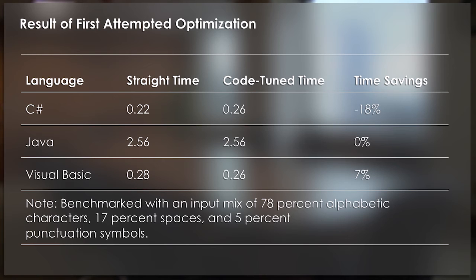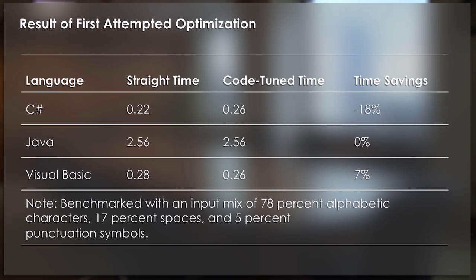Well, in C Sharp, we actually degraded performance by 18%, which is kind of counterintuitive. In Java, the change had no effect whatsoever on performance. And in Visual Basic, we actually improved performance by 7%. And interestingly enough, the improvement in Visual Basic was actually less than the worsening of performance in C Sharp. So in this case, this is actually, I think, a pretty representative example where we have about a one-third chance of improving performance and a two-thirds chance of either having no impact on performance or degrading performance.